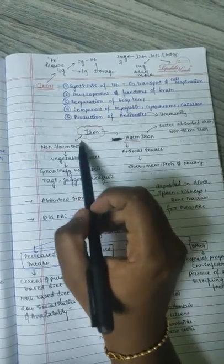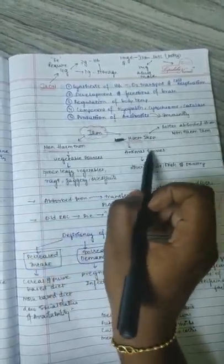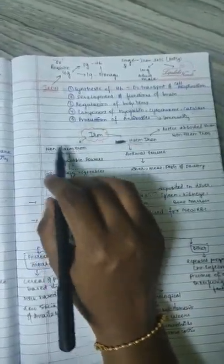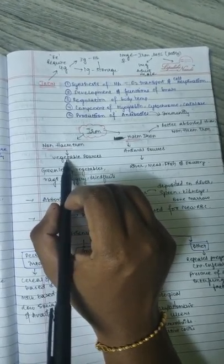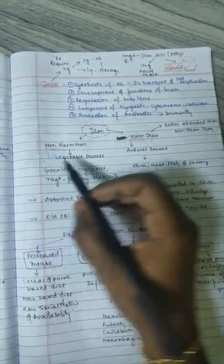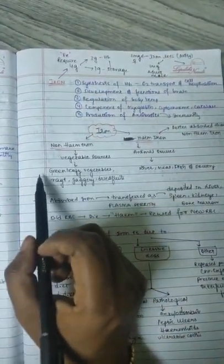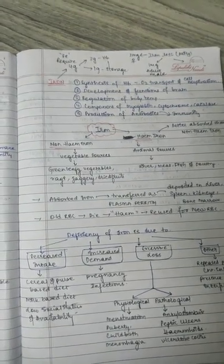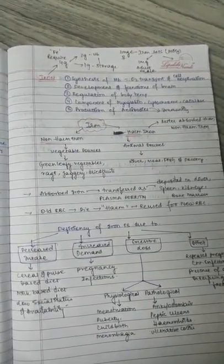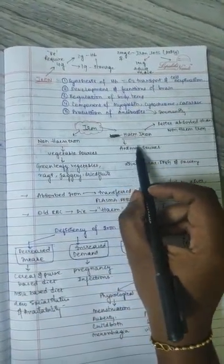These iron are of two types: non-heme iron and heme iron. Non-heme iron is completely available from vegetable sources. Heme iron is available from animal sources. Non-heme iron is available from vegetable sources like green leafy vegetables, ragi, jaggery, and dried fruits.